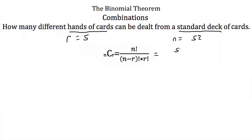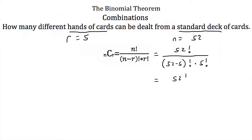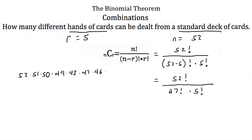This is equal to 52 factorial over n minus r — so 52 minus 5 factorial — multiplied by 5 factorial. If we simplify the subtraction, this is the same as 52 factorial over 47 factorial times 5 factorial. Now 52 factorial is 52 times 51 times 50 times 49 times 48 times 47 times 46 times 45 and so on all the way down to one — a huge number.